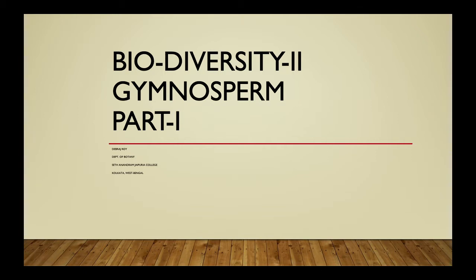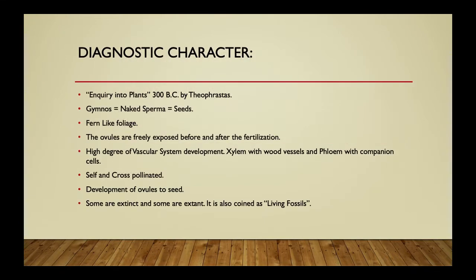This section describes the gymnosperms, exclusively for Calcutta University generic elective courses of botany. The diagnostic characters of gymnosperms were first described around 3000 BC by Theophrastus in 'Inquiry into Plants.' The word gymnosperm comes from 'gymnos' meaning naked and 'sperma' meaning seeds, so these plants have their seeds completely naked, without any fruit coat or fruit layers.